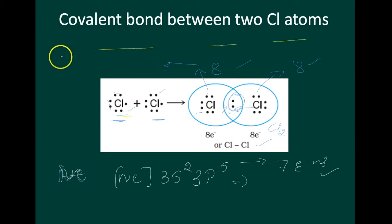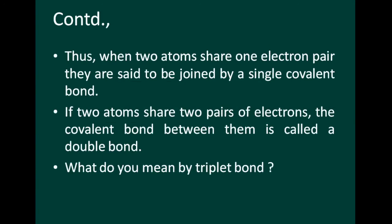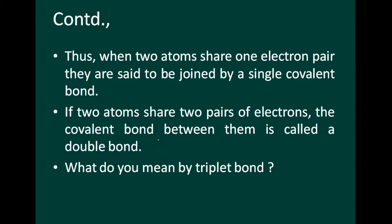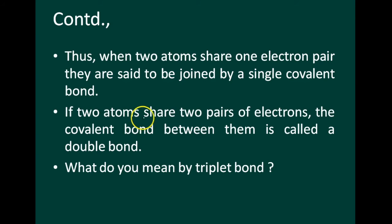These are called Lewis dot structures, where the dots represent the electrons. Lewis dot structures can be written for other molecules in which the combining atoms may be identical or different. An important condition is that each bond is formed as a result of sharing of an electron pair between the atoms. When two atoms share one pair of electrons they are joined by a single covalent bond, and there are also double and triple covalent bonds.